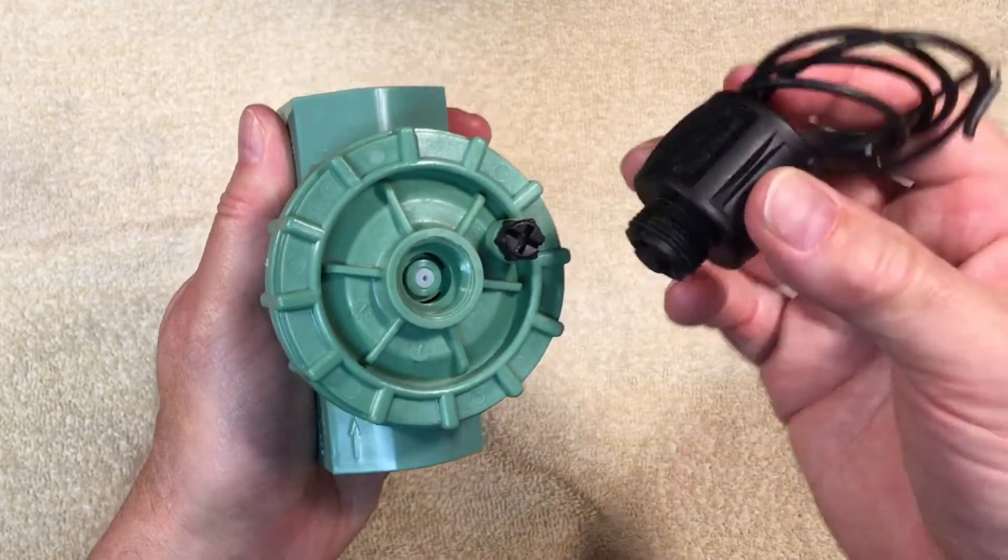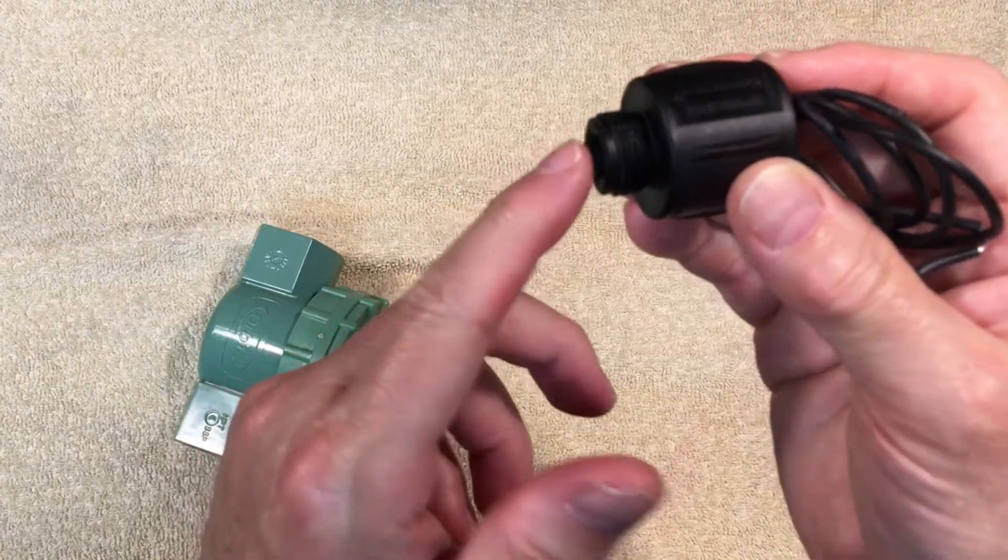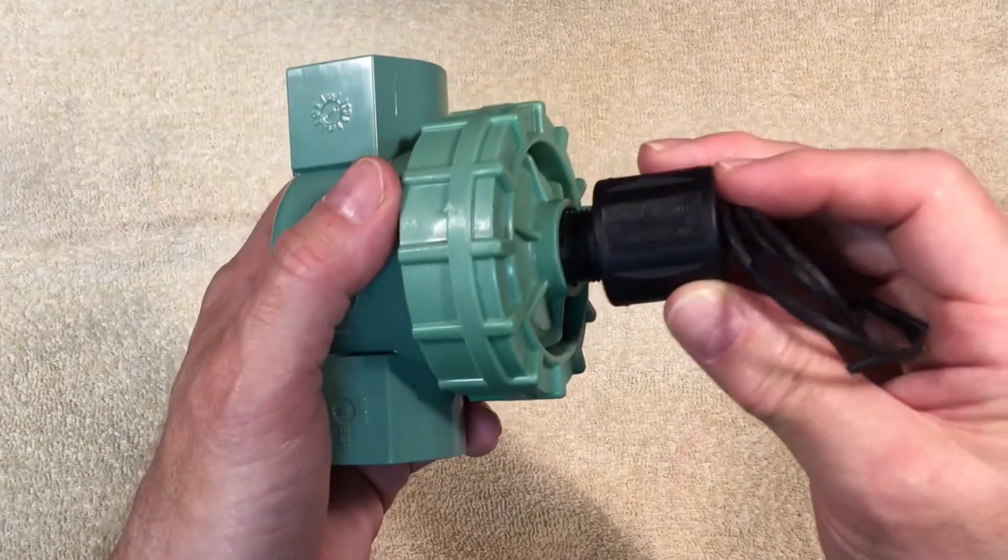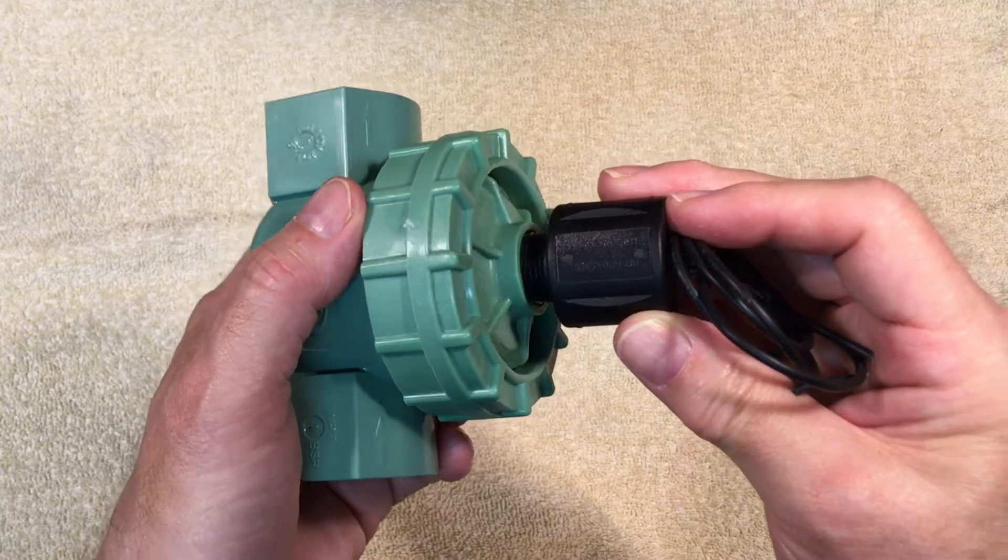When the solenoid is not engaged or when the valve is closed, this hole at the top of the little seal is plugged off by the rubber tip of the solenoid. More about this later.